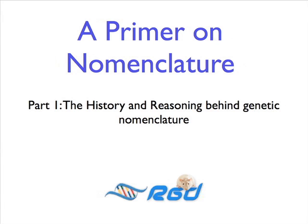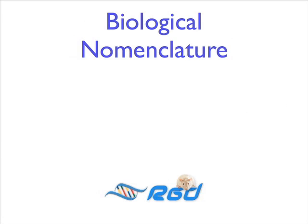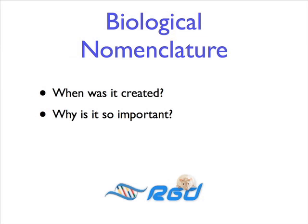This video is the first in a suite of tutorials on the ins and outs of assigning correct nomenclature to genes, quantitative trait loci, or QTLs, and strains. In this video, we will briefly look at the history of biological nomenclature, why it is important to standardize nomenclature, and who is in charge of assigning nomenclature for objects in various species. The other videos in this series will look in more detail at nomenclature for genes, QTLs, and strains.